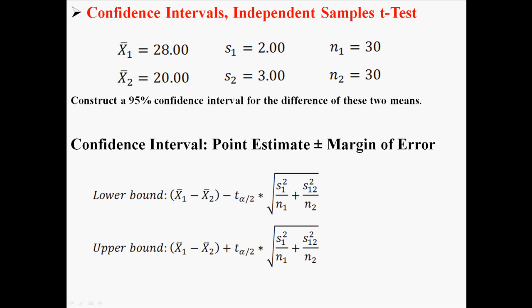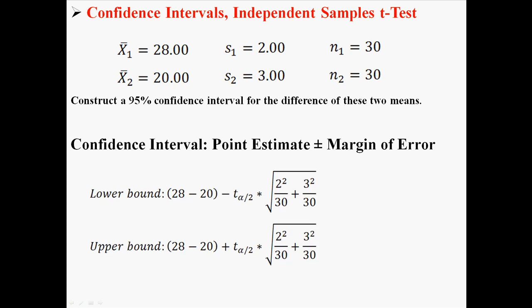These are the equations for the lower bound and the upper bound in a t-test. Notice that we already know the sample means for sample 1 and sample 2, the sample standard deviations for sample 1 and sample 2, and the sizes of sample 1 and sample 2. So I can put in the pieces that we already know, and all we really need is that t alpha divided by 2. If we had that, we could find the lower bound and the upper bound.